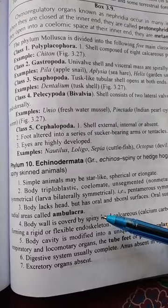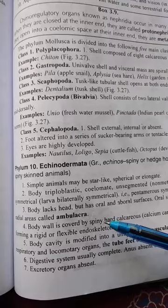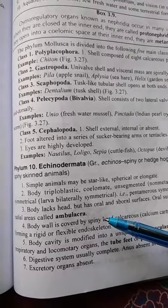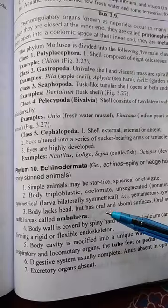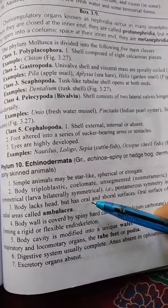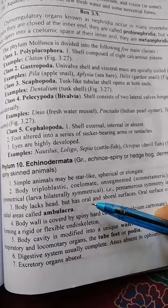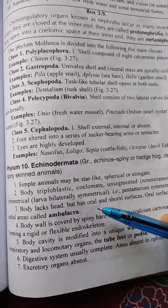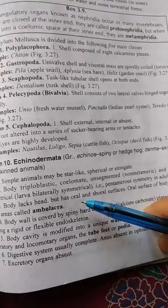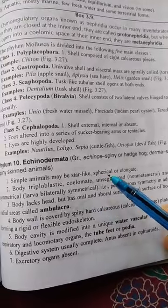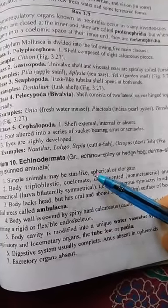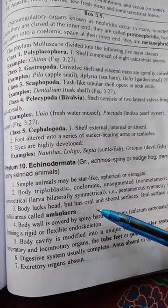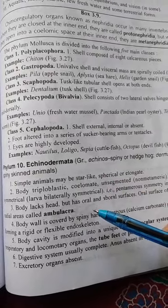They are triploblastic, true coelomates — they possess a true coelom, so they are neither acoelomate nor pseudocoelomate. Their body is unsegmented, or non-metameric. They are bilaterally symmetrical in larvae, but in adults they exhibit pentamerous symmetry.